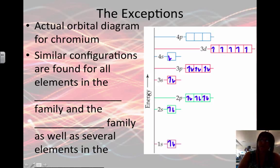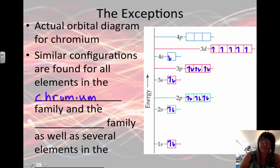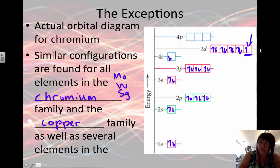The actual orbital diagram for chromium looks a little bit different from what we would normally predict. You'll find similar configurations for all of the elements in the chromium family: molybdenum, chromium, tungsten, and seaborgium. And then the copper family is going to have something similar as well. They take one out of the s and put it into the d. So the copper family all acts the same way. They gain a lot of stability by filling in an s orbital in the d section. That would be copper, silver, and gold.